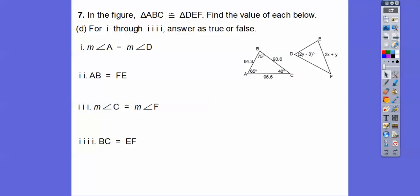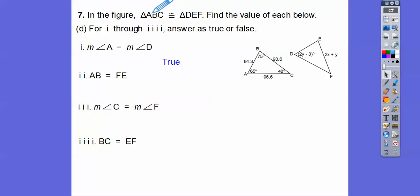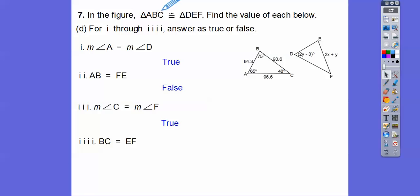Now answer true or false. Is the measure of A equal to the measure of D? That's the first letter matching first letter — true. Is AB equal to FE? AB is first and second letter, but FE is third and second letter — false. AB is equal to DE. How about C congruent to F? Third letter, third letter — true. How about BC and EF? Second and third, second and third — true.